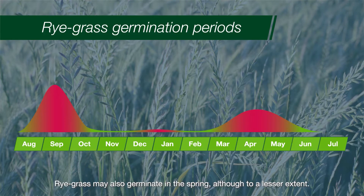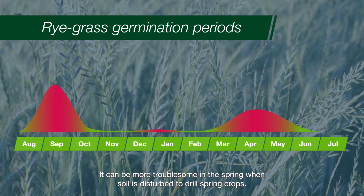Rye grass may also germinate in the spring, although to a lesser extent. It can be more troublesome in spring when soil is disturbed to drill spring crops.